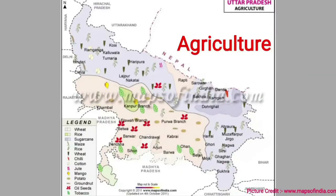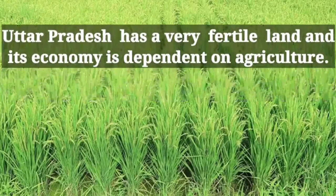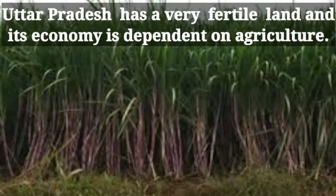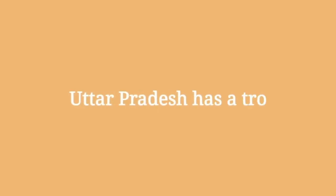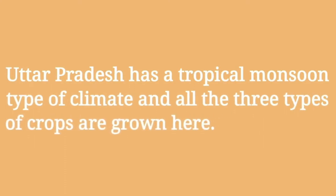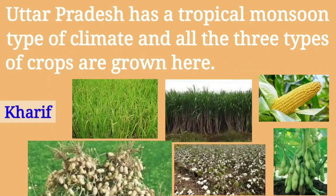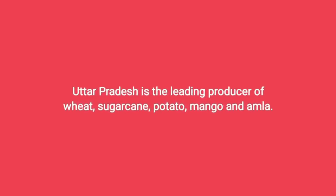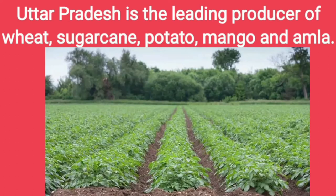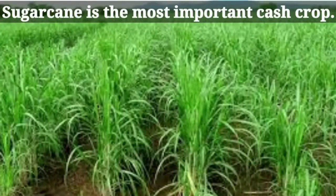Let us know the status of UP in the context of agriculture, irrigation, minerals and industry. Uttar Pradesh has very fertile land and its economy is dependent on agriculture. It has a tropical monsoon type of climate and all three types of crops are grown here: Rabi, Kharif and Zaid. Uttar Pradesh is the leading producer of wheat, sugar cane, potato, mango and amla. Sugar cane is the most important cash crop.